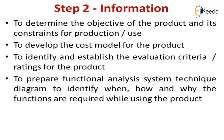Step two is information. We need to determine the objective of the product and its constraints for production or use — what are the drawbacks and bottlenecks for manufacturing or using a particular product. Then we have to develop a cost model: how much cost will be spent, and what will be the rate of return if there is an initial investment cost. Then we identify and establish the evaluation criteria rating for that particular product, to see at what position our product stands.